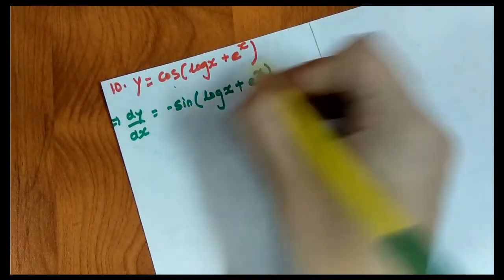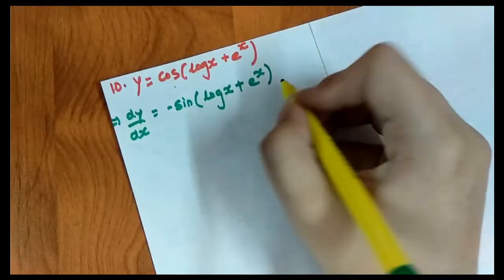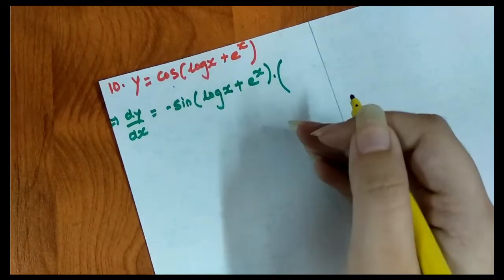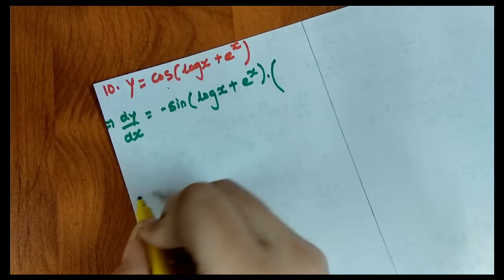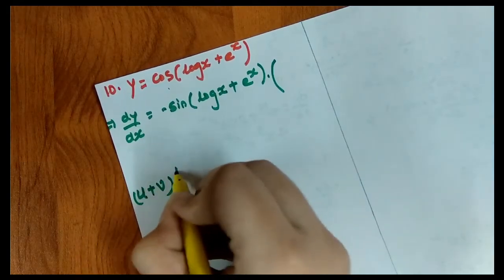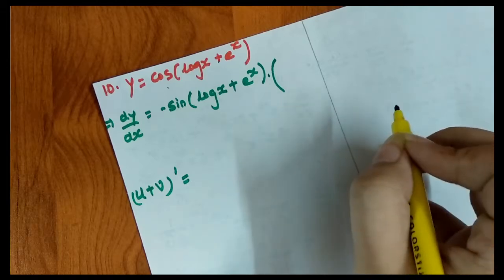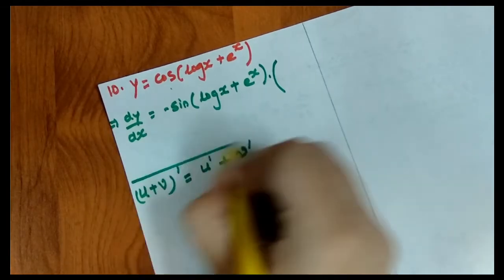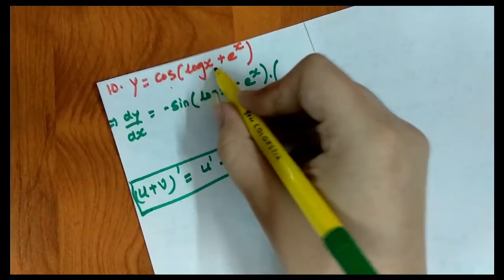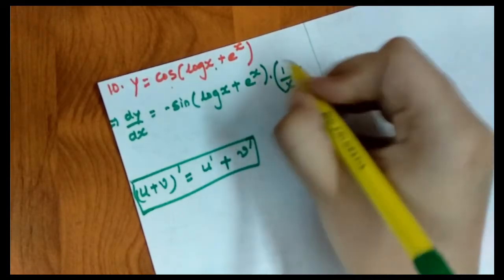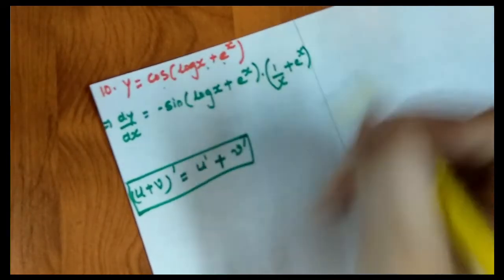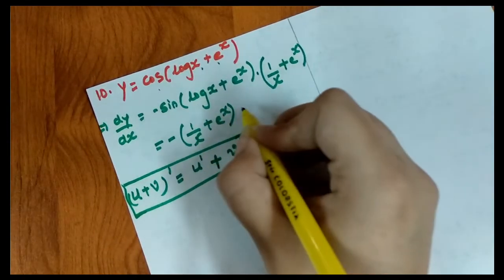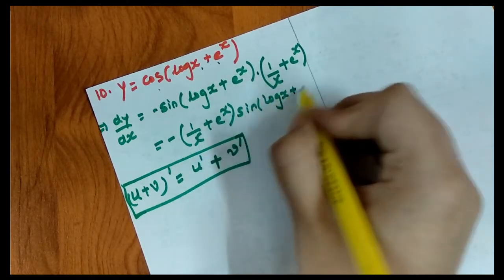Now for the next expression involving sin(log x + e^x): when we have a sum u + v, we differentiate each term independently — u' and v' — and add them. So dy/dx = cos(log x + e^x) times the inner derivative, which is 1/x + e^x. Writing it out: cos(log x + e^x) · (1/x + e^x). That completes the exercise.